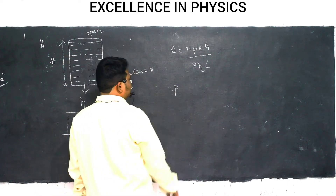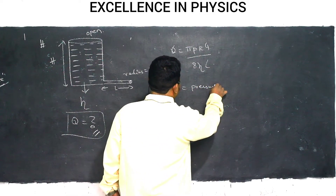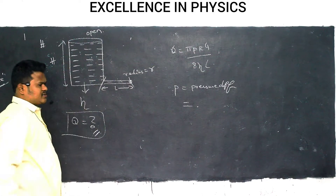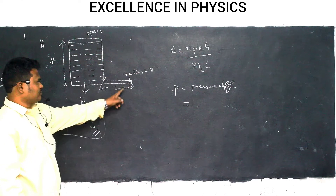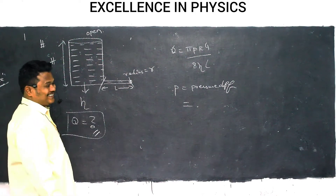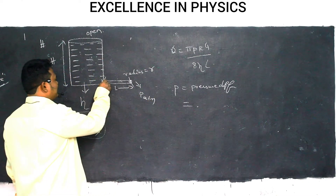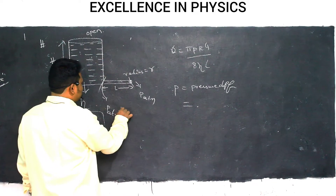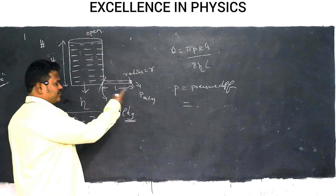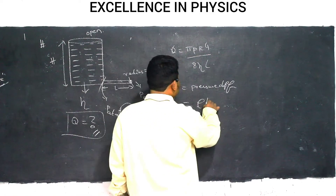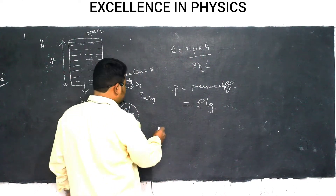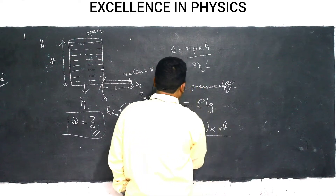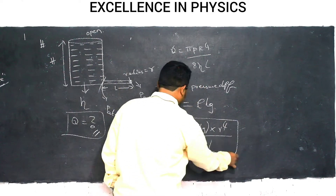The key is finding the pressure P, which is the pressure difference. At the top (open end) pressure is atmospheric, p_atm. At the bottom of the capillary, pressure is p_atm + ρhg. So the pressure difference is ρhg. Substituting: Q = π × ρhg × r⁴ / (8η × l). That is the answer.